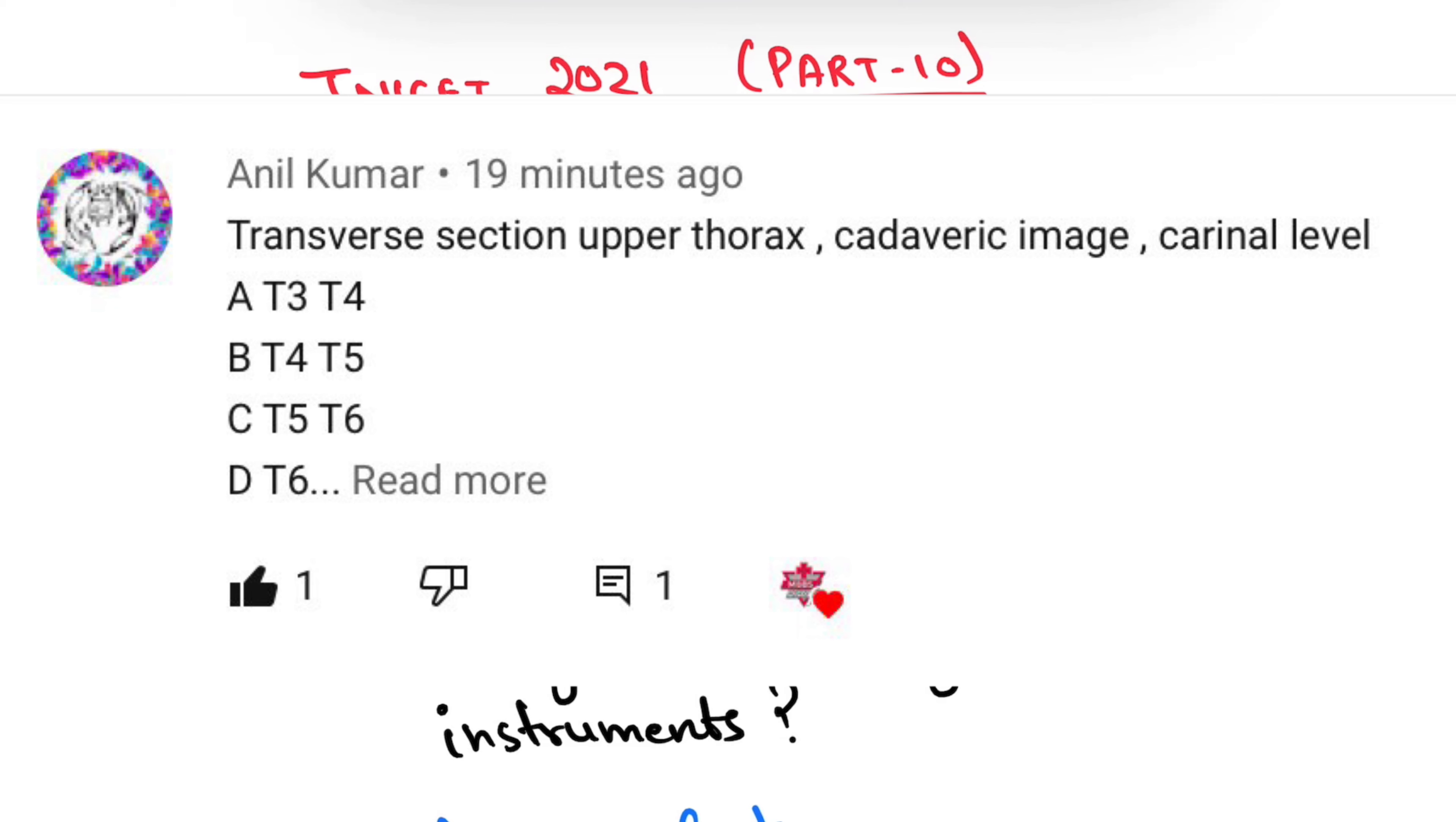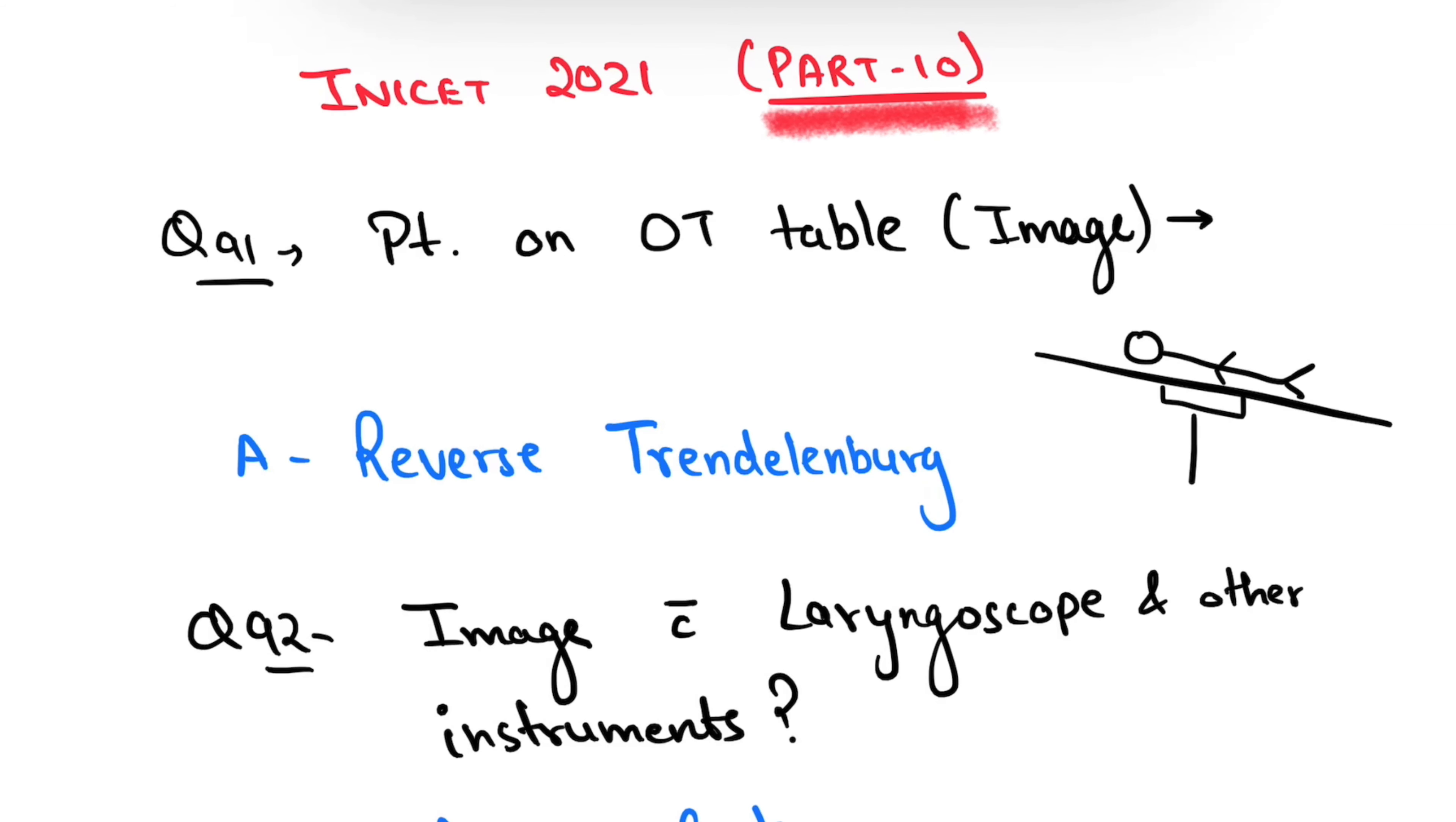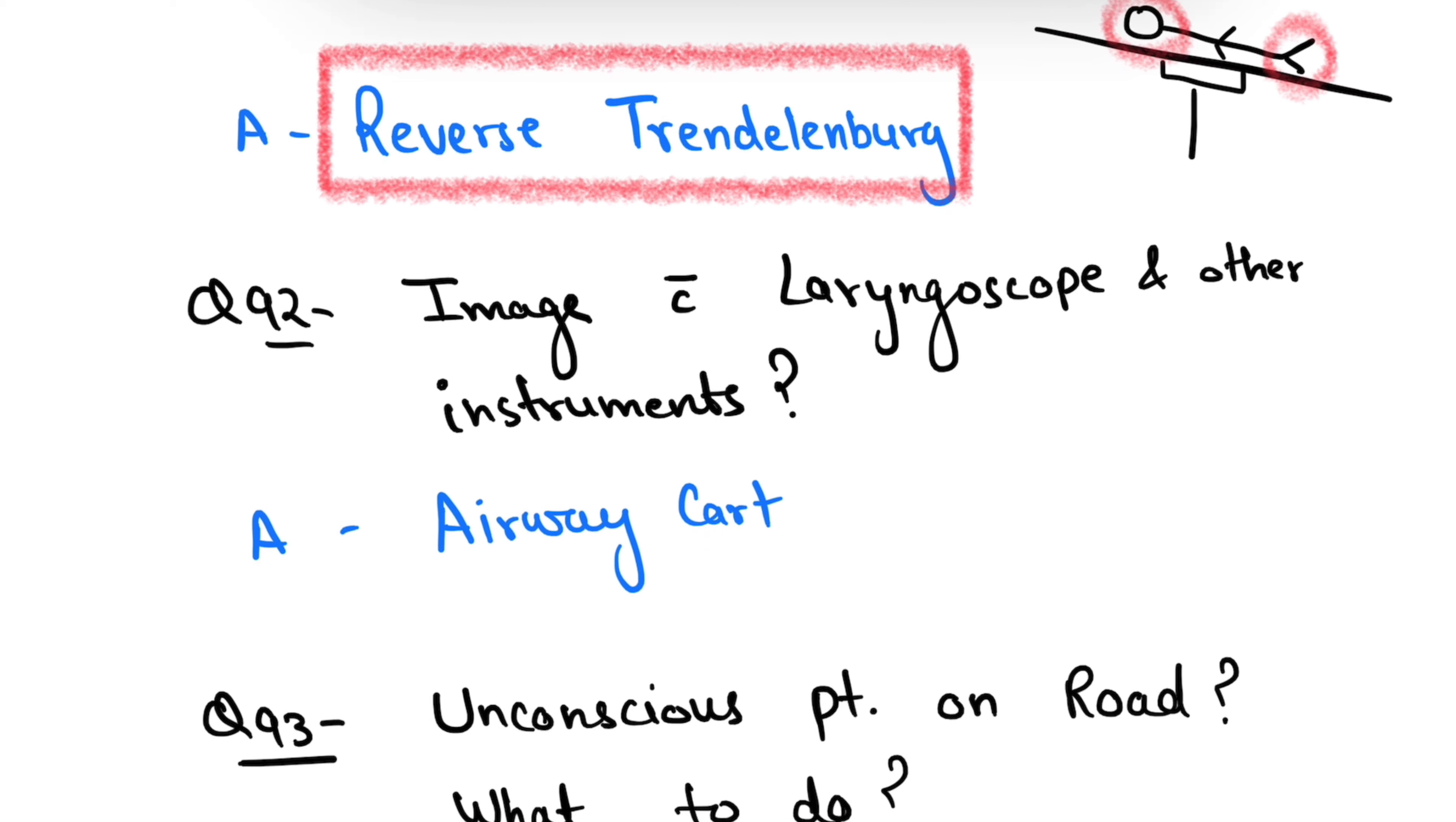First, I'd like to thank Dr. Anil Kumar for his contribution. Your questions will be discussed at the end of this video. The first question is about a patient on the OT table. An image was given in which the head is elevated and legs are down. This position is known as reverse Trendelenburg position. Next question: an image was given in which laryngoscopes and other instruments were there, and that was a cart.